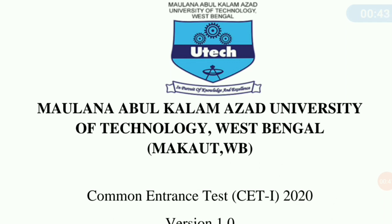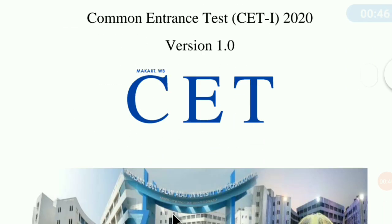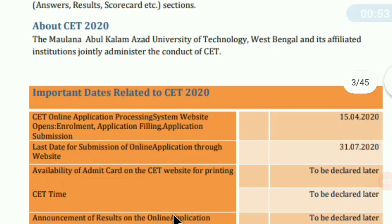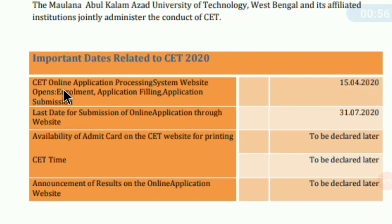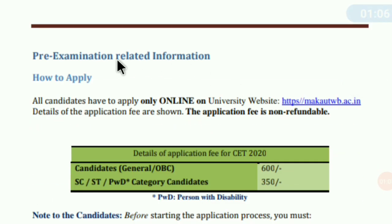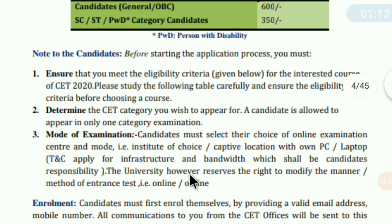First, the Common Entrance Test 2020. I got the official website. Now you can see some of the things I am going to find. Our application form was filled up — the last date was 31st July. Next, we are going to see pre-exam related information. We have paid our fee of 600/350. Now, ensure that you meet the eligibility criteria given below for the interested course of CET 2020 — study the table carefully and ensure eligibility before choosing a course.